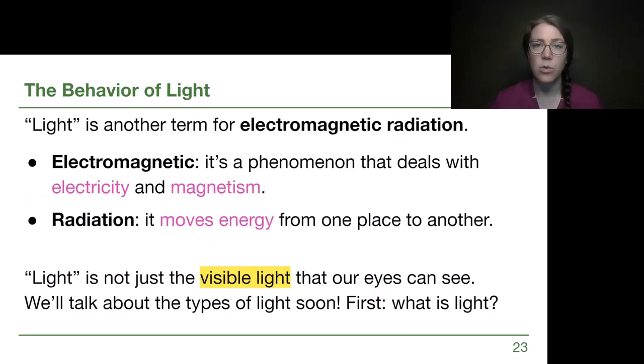Now light, when we use that term in astronomy, is a specific term that describes all of electromagnetic radiation. It's a pretty big term so let's break that down a little bit. The word electromagnetic means that it's a phenomenon that deals with electricity and magnetism and the way that those two different ideas connect with each other. And then radiation is a science word for the description of energy moving from one place to another. It has a lot of negative connotations in our everyday lives, but it simply means energy moving from one place to another in the context of science.